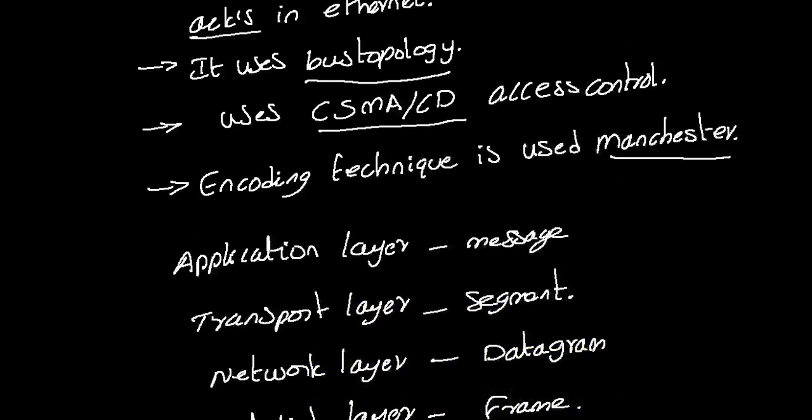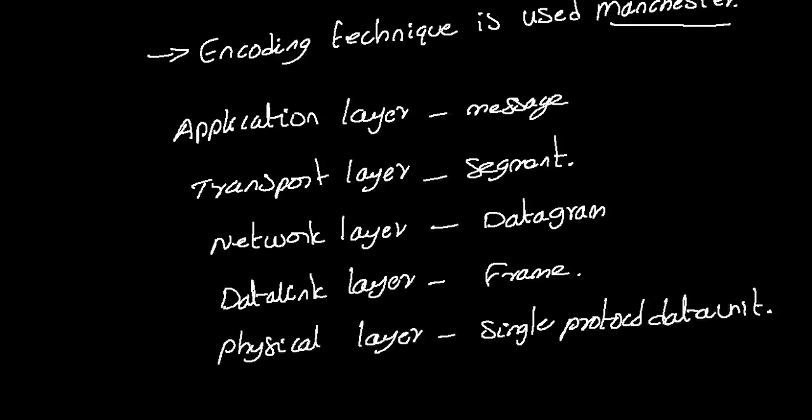Here the frame is taken care by the Ethernet. In the case of the application layer it will be a message, in transport layer it is a segment, in the network layer it is called a datagram, in data link layer it is a frame, and in physical layer it is a single protocol data unit.